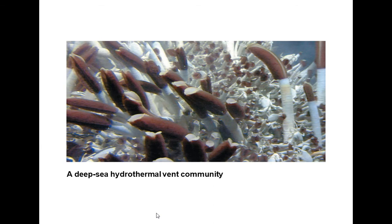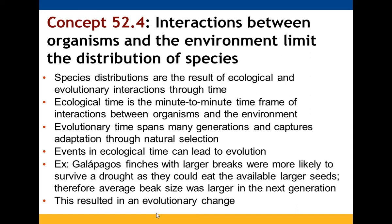Interactions between organisms and environment limit species distribution. Species distribution is shaped in part by evolution but also by ecological interactions taking place right now. Ecology examines minute-by-minute interactions while evolution looks at changes over multiple generations through natural selection. Ecological events can lead to evolutionary changes — for example, Galapagos finches with larger beaks were more likely to survive droughts by eating larger seeds, so beak size tended to increase in subsequent generations, leading to an evolutionary change over time.